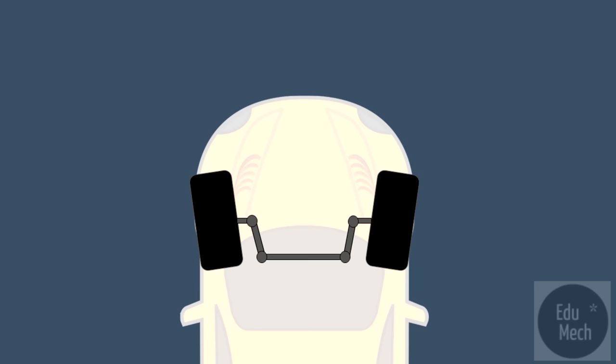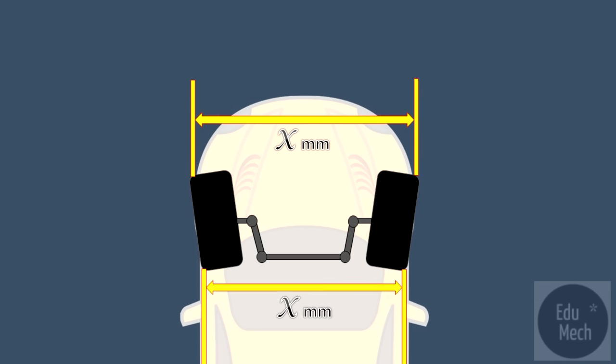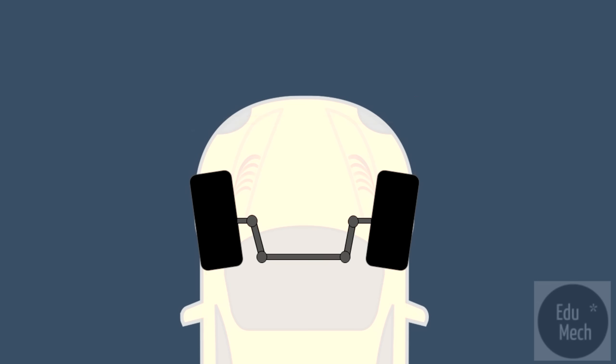Put simply, it's the difference between the distances of the front of the wheels to the rear of the wheels. This can be measured as a linear measurement between the toes of the tires, or as an angular measurement of the wheels.